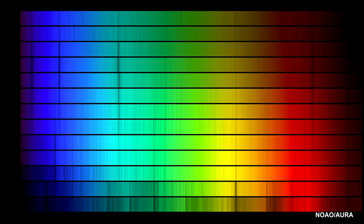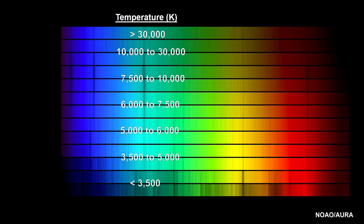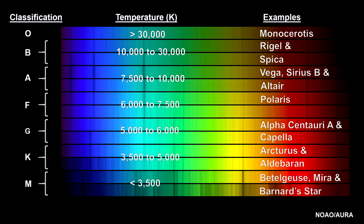When scientists discovered connections between groups of spectral lines and star temperatures, they developed a set of spectral classifications to highlight this connection. Every star we have seen so far fits into one of these classifications.